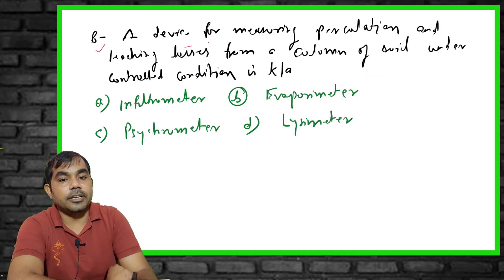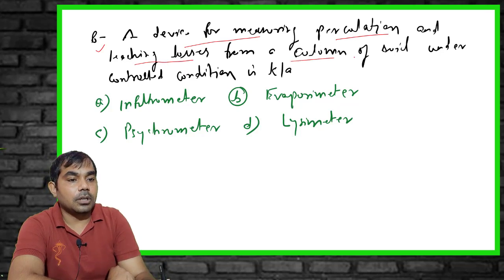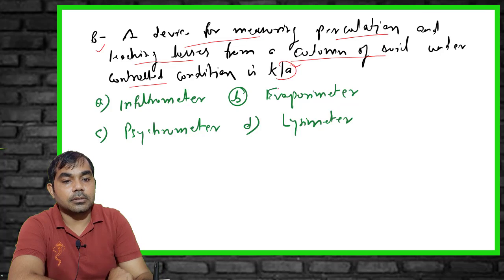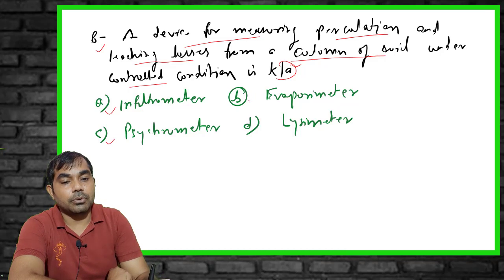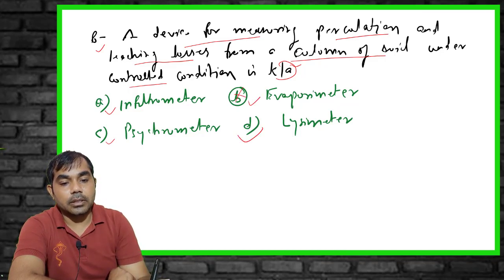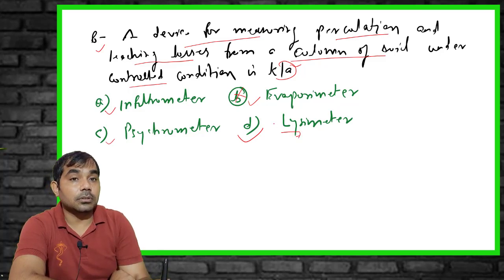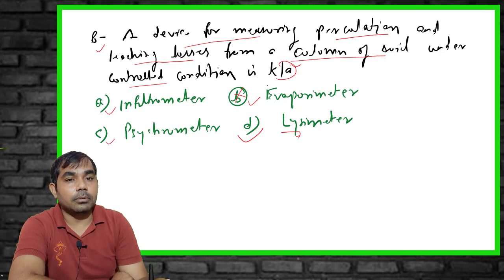The eighth MCQ: a device for measuring percolation and leaching losses from a column of soil under controlled conditions is known as what? Options include infiltrometer, psychrometer, and evaporometer — all wrong. The right answer is lysimeter. A lysimeter is used for measuring percolation and leaching losses from a soil column and is very useful in field experiments.